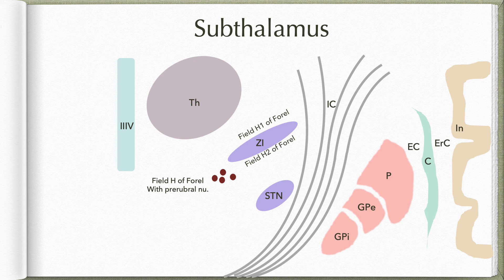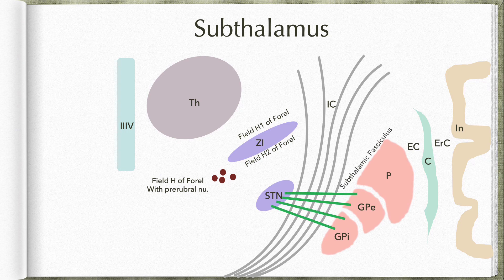Let us now look at the intrinsic fiber bundles in this area. In addition to the fibers coming to relay in the ventral tier nuclei of the thalamus, there are fiber bundles connecting the basal nuclei with the thalamus. The first is the subthalamic fasciculus, which connects the subthalamic nucleus with the globus pallidus externum and internum. The main input to the subthalamic nucleus comes from the globus pallidus externum; the main output goes to the globus pallidus internum, with some fibers also reaching the externum. These fibers, shown in green, pass between the fibers of the internal capsule.